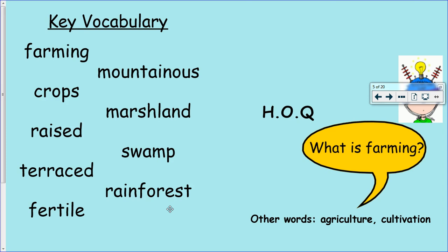I want you to start thinking of this higher order question first - what is farming? How would you describe farming to someone? Farming is obviously the growing of crops, plants, food, things like that. But also it can be the rearing of animals as well - raising animals, allowing them to grow and then possibly slaughtering and using them as food. Other words for farming, or synonyms, are agriculture and cultivation. You may see those words as we go through today.